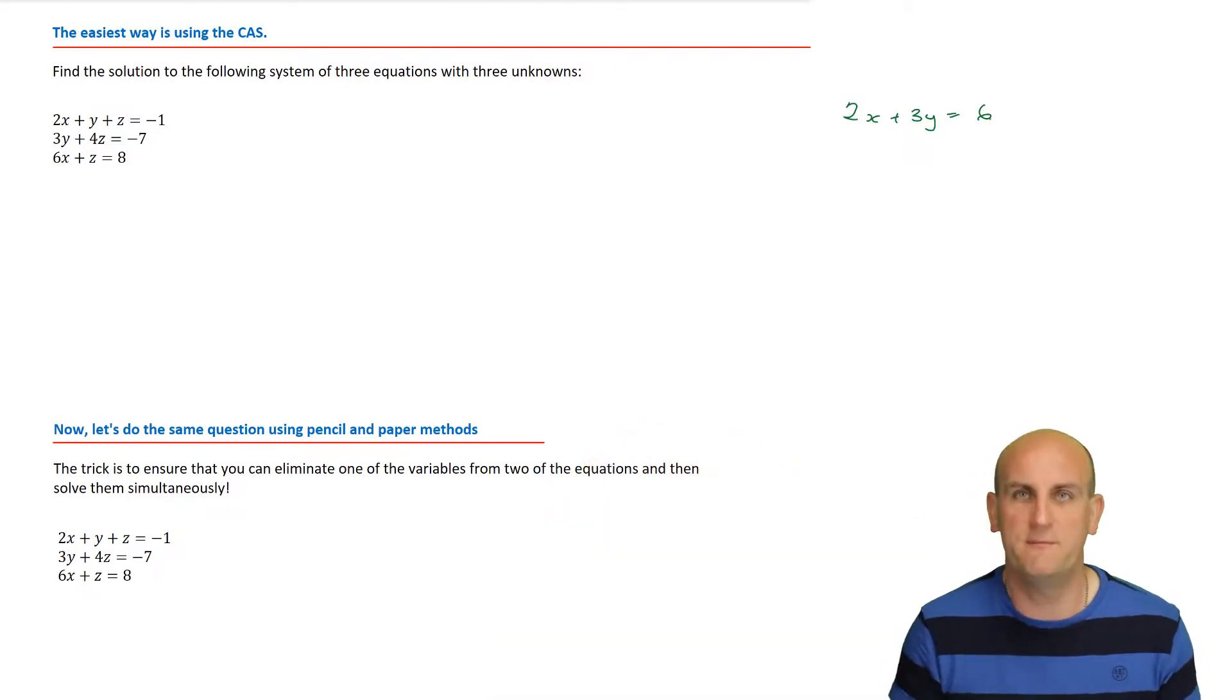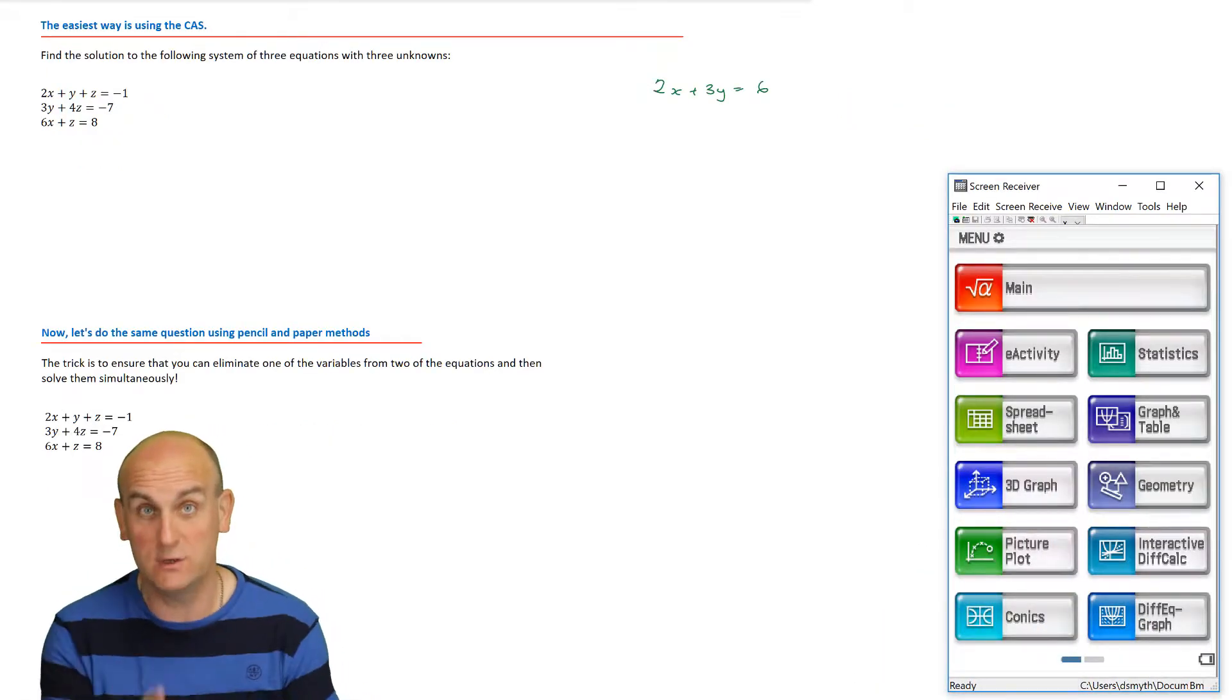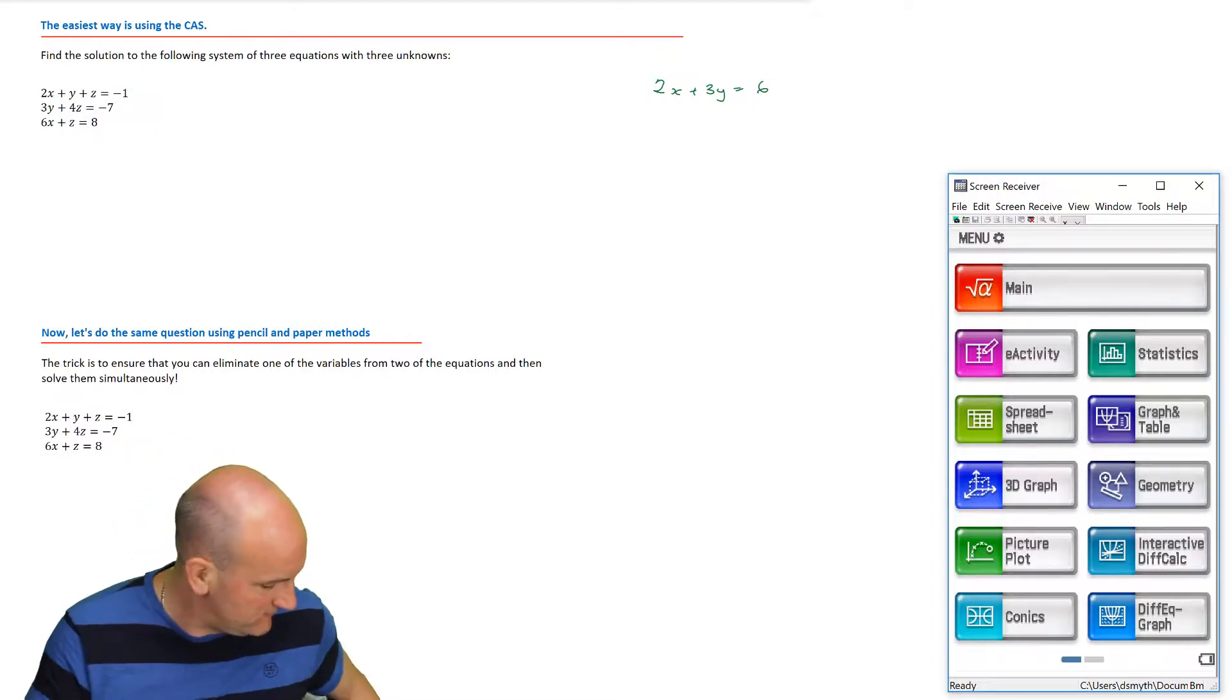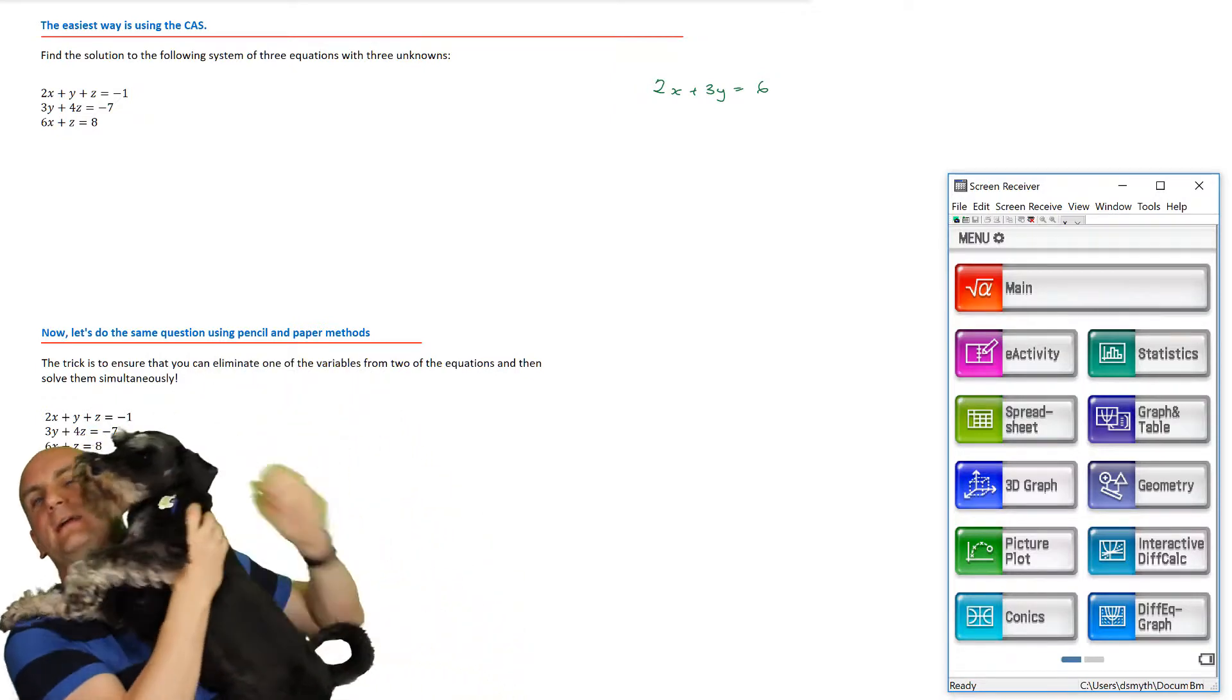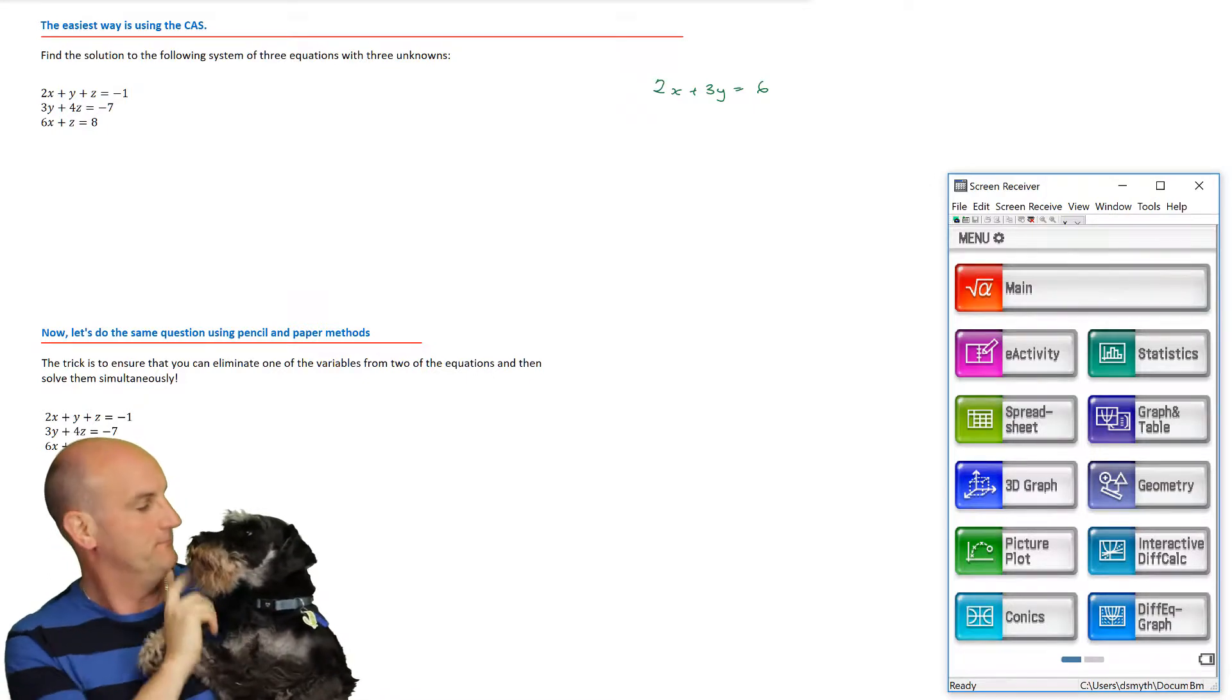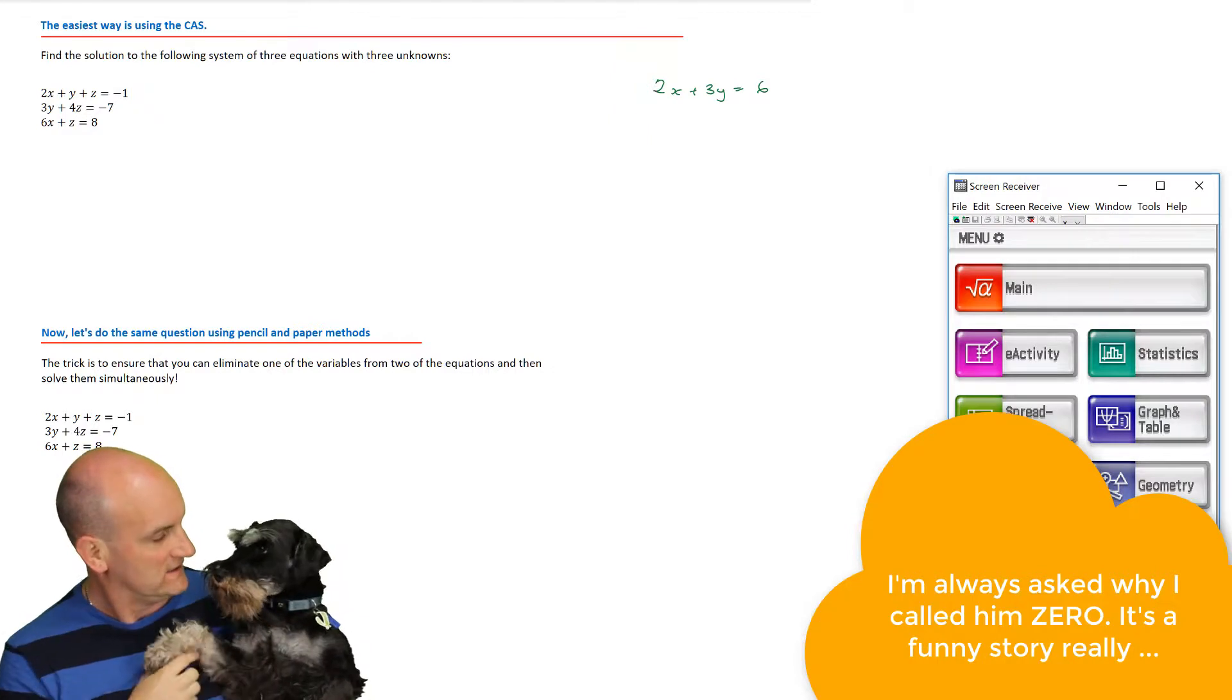Now normally we're used to having an x and a y, and equations like 2x plus 3y equals 6 stood for a straight line, but what on earth does 2x plus y plus z equals minus 1 actually mean? Well, I'm going to pause the suspense because it's coming later in the video. So I'm going to fire up my CAS and input these equations. I am using the Casio class pad.